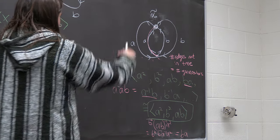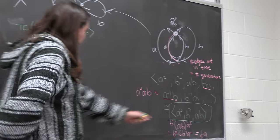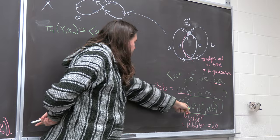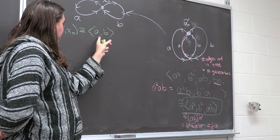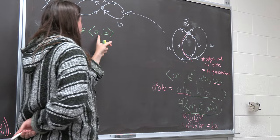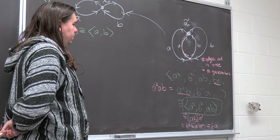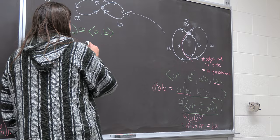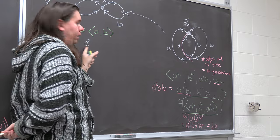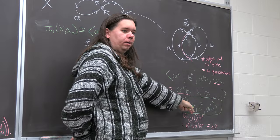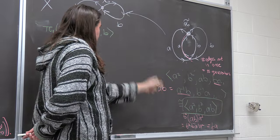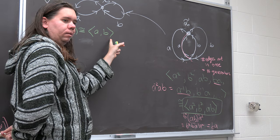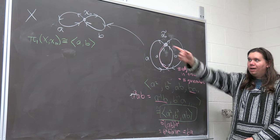So this covering space covers that one, and the π₁ of the cover is a subgroup of π₁(X). Things in the bigger group but not this subgroup include a single a, or odd powers of a or b — confirming it's a proper subgroup.